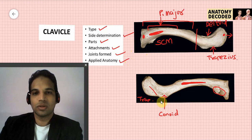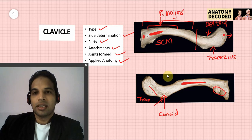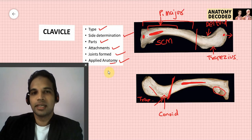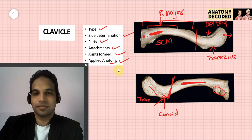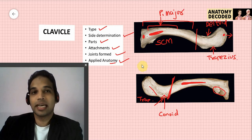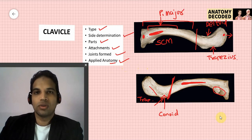In applied anatomy, the costoclavicular ligament region is where weight is transmitted from the scapula to the clavicle, making fracture of the clavicle most common at the junction of the medial two-thirds and lateral one-third. There is also a congenital condition called cleidocranial dysostosis, where the clavicle may be partially developed, partially absent, or completely absent, associated with cranial bone deformities.